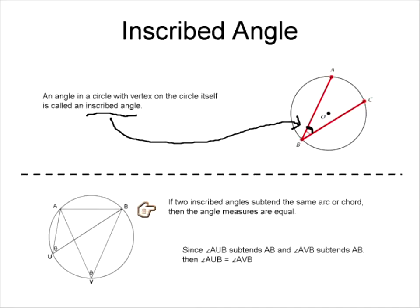Here's a property of inscribed angles: if two inscribed angles subtend the same arc or chord, then the angle measures are equal. We have two inscribed angles here. One inscribed angle goes from A to U to B, and it inscribes chord AB. Any other inscribed angle that subtends that same chord must be the same angle measure. We can clearly see that going A to V to B also subtends that same chord, so the angles inscribed must be equal — these two angles have to be the same.